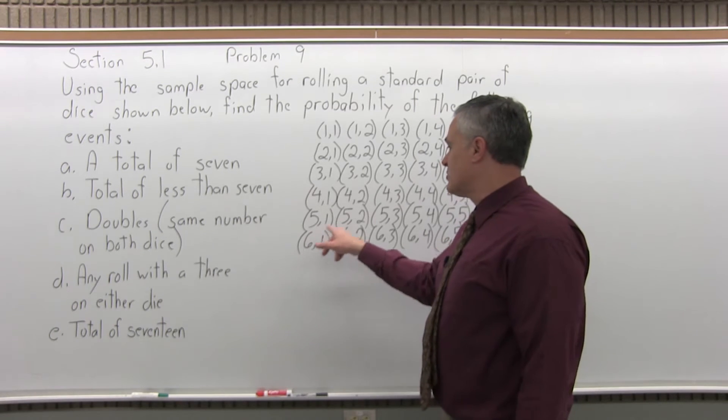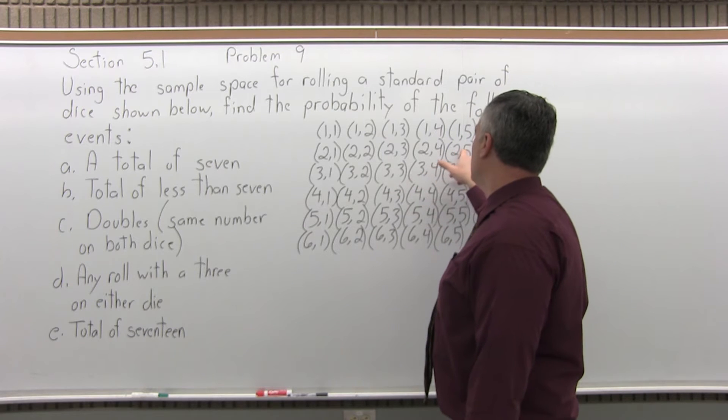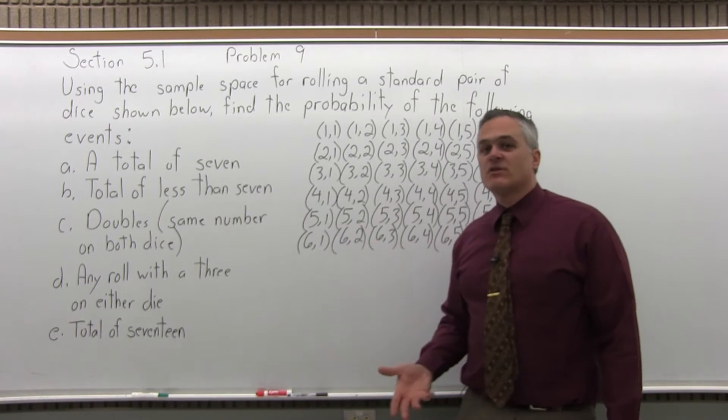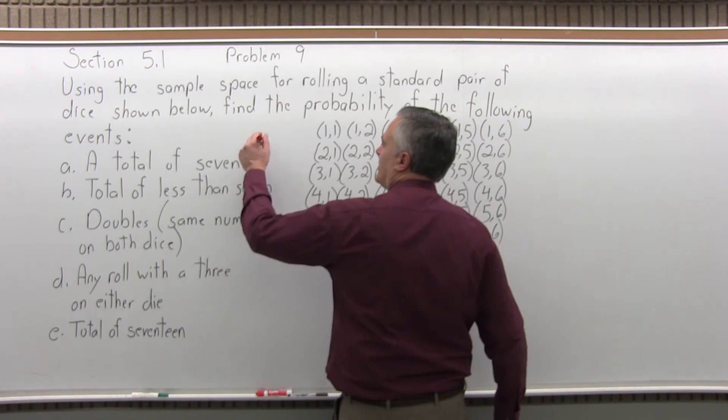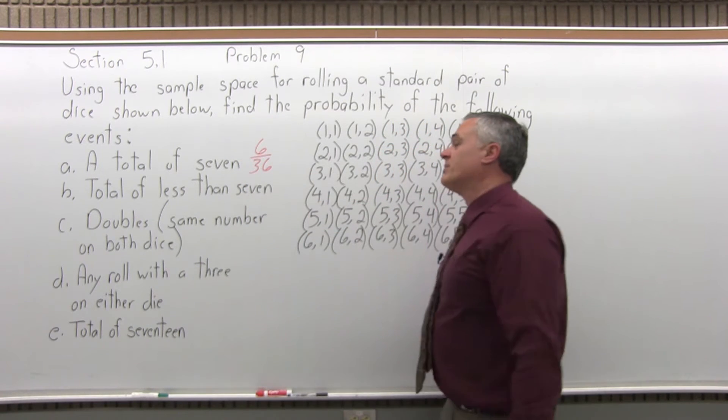Well, they go along this diagonal. There's 6,1, 5,2, 4,3, 3,4, 2,5, and 1,6. So 1, 2, 3, 4, 5, 6 out of the 36 rolls give you a total of 7. So that's the probability of getting a total of 7 when you roll a pair of dice.